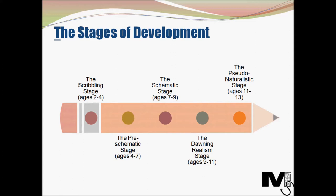The stages are: the scribbling stage, which happens during ages 2 to 4; the pre-schematic stage, between ages 4 to 7; the schematic stage; the dawning realism stage; and the pseudo-naturalistic stage. The age brackets are mentioned alongside the stages. Now let's look at each stage one at a time.